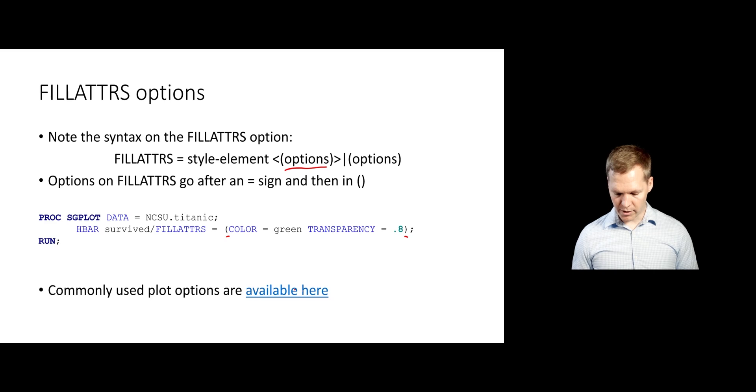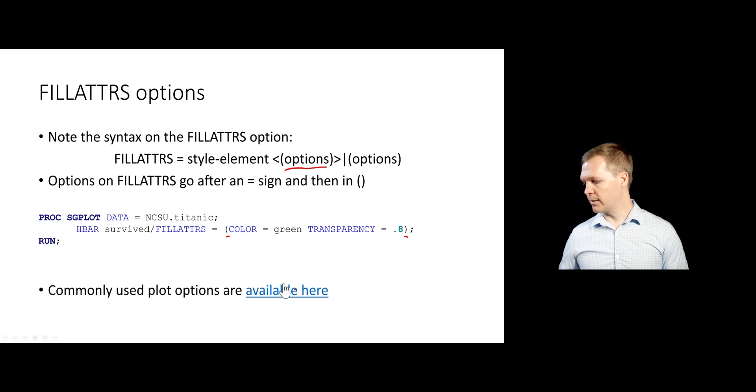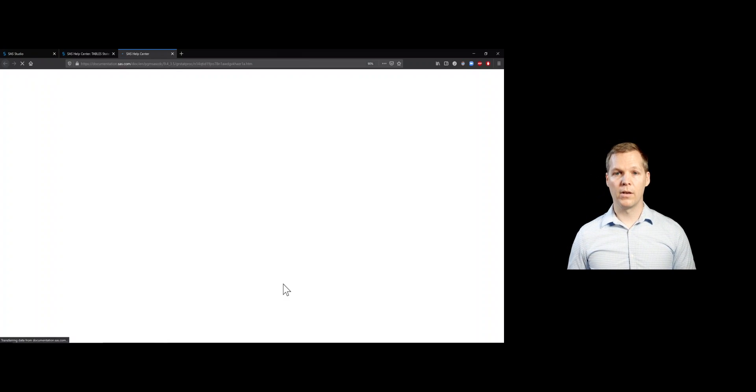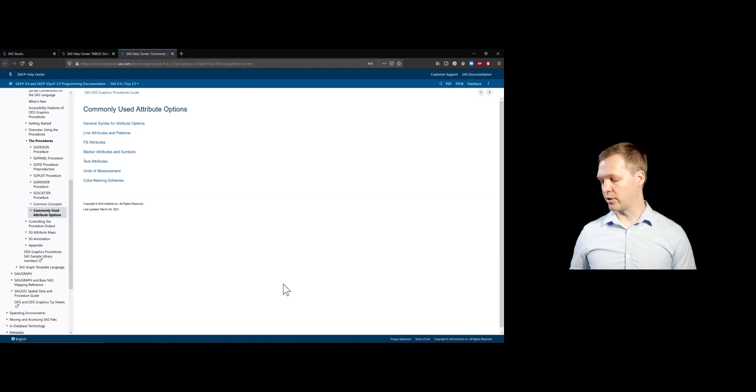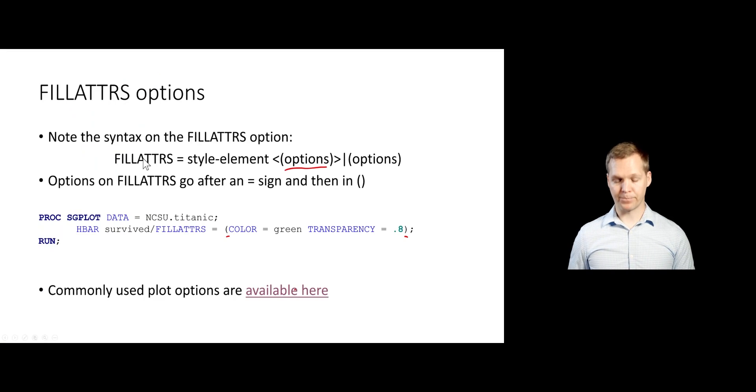I should point to these commonly used options. Let me go ahead and open up that. So there's a website that gives you the most commonly used options that you're going to change on your plots. For instance, there's line attributes and patterns, fill attributes, which we were just talking about, marker attributes and symbols, text attributes and things like that. So there's a whole lot of different options that we can change. And there's a page dedicated to the common ones that you'll be messing around with.